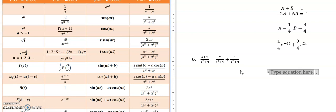Now in this case, the cosine is easy. It's just s over s squared plus a squared, where a is 3. So I get cosine 3t.